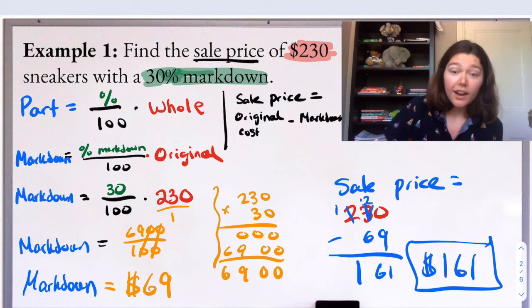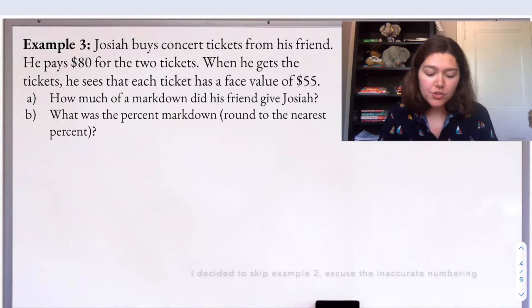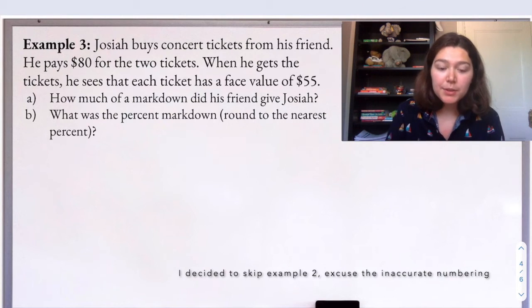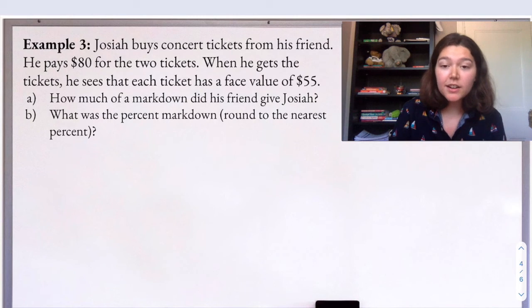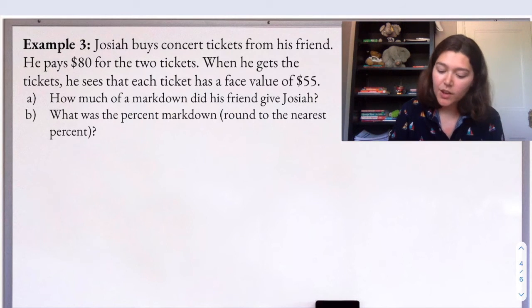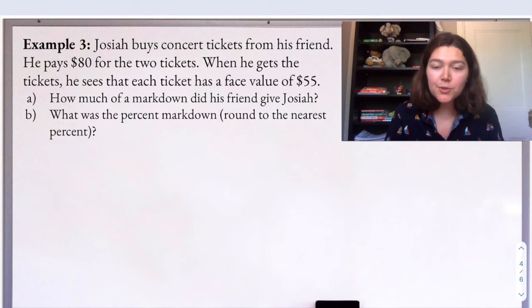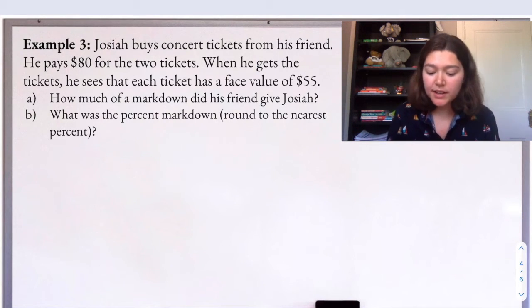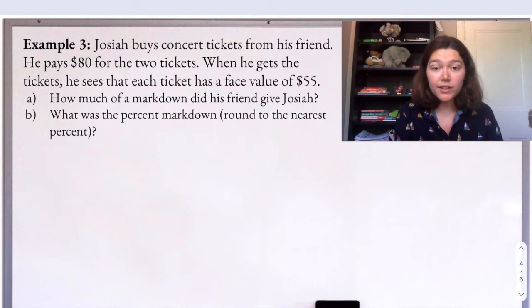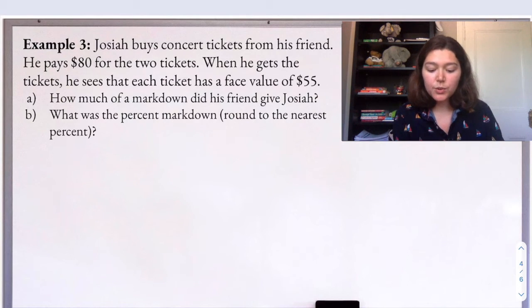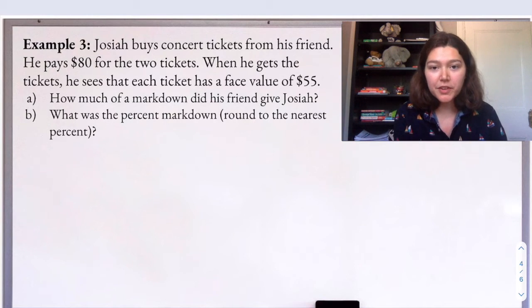So that's the final price is going to be the original $230 minus $69, and we get $161 as our sale price. All right, let's look at another example. Josiah buys concert tickets from his friend. He pays $80 for two tickets. When he gets the tickets, he sees that each ticket has a face value of $55. Part A, how much of a markdown did his friend give Josiah? And part B, what is the percent markdown? Round to the nearest percent.